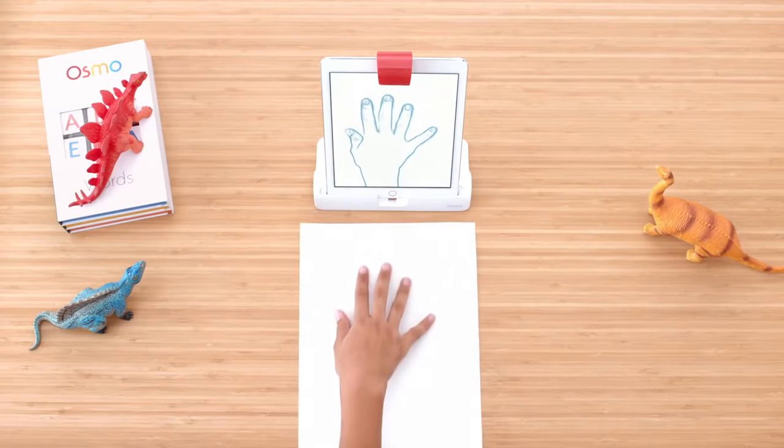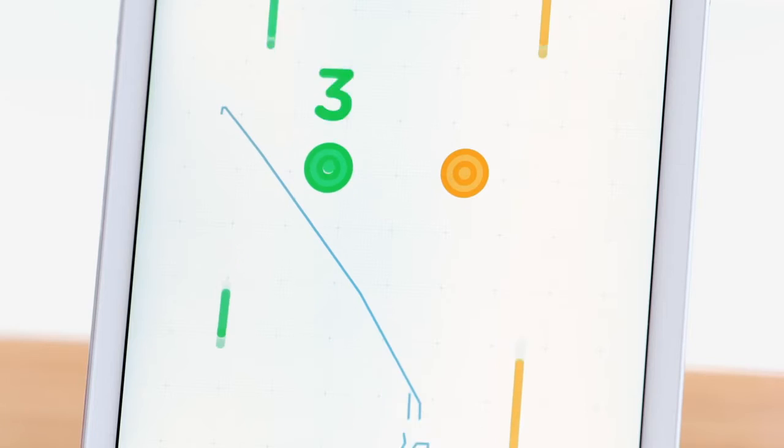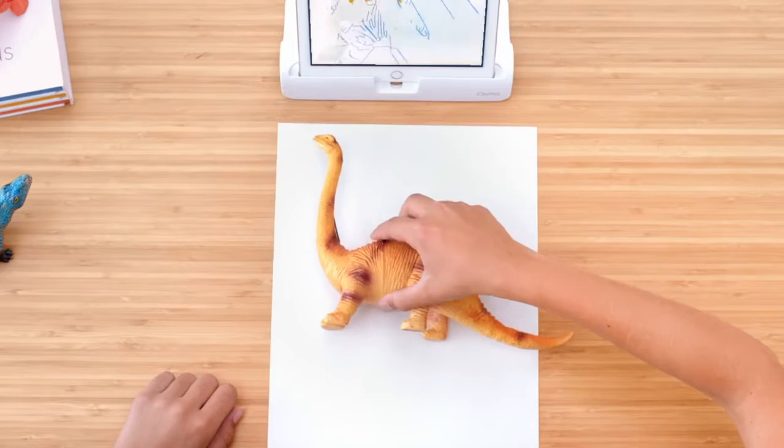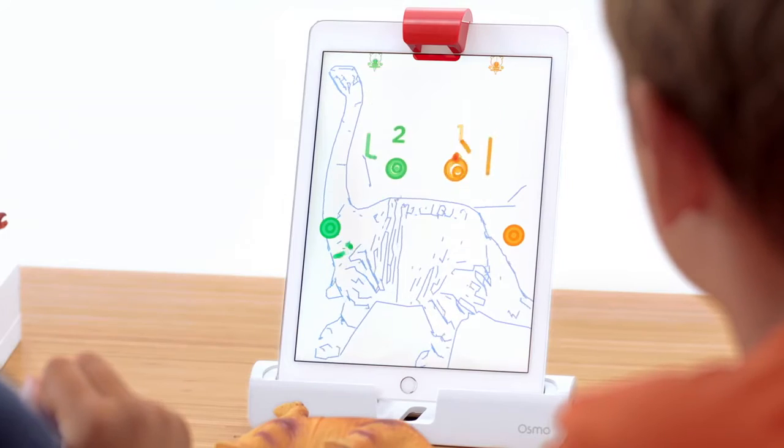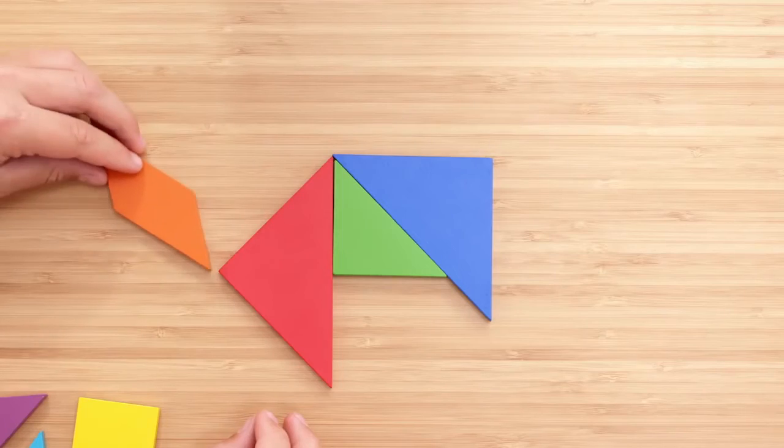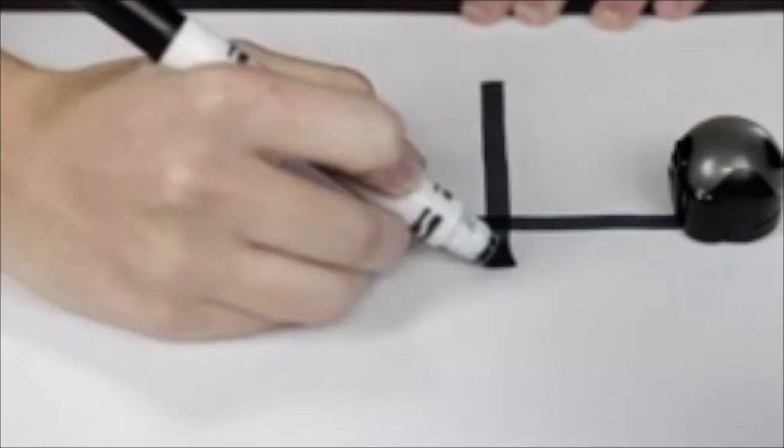Osmo takes things in the real world and shows them on your iPad. You can learn how to code. You can make pizzas. Whatever you have in front of your iPad also shows up on the Osmo.